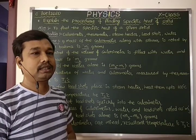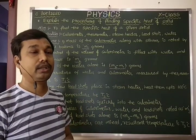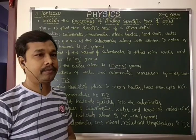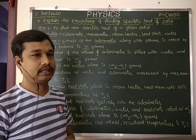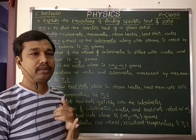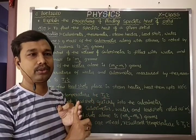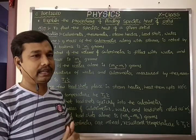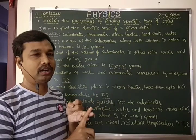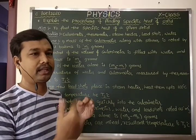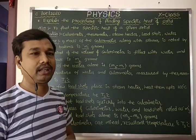Then we measure the mass of the calorimeter, water, and lead shots combined together. We have the calorimeter, water, and lead shots all combined, and that total mass is noted as M3 grams.